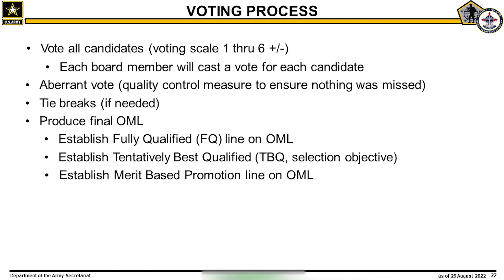We will now cover the voting process. During a board, this process will be repeated until every candidate in the population is evaluated. Board members will vote all eligible candidates using the scale depicted on the word picture. Once voting is complete, board recorders run an aberrant vote report. An aberrant vote is when a file receives two or more scores that may vary by three or more whole numbers. For example, your file receives a score of a 5 plus and a 2 minus — a whole number difference of 3, which is aberrant. Your file is then sent back to the voters who gave you the 5 plus and the 2 minus; the voters have no obligation to change their score. This is done as a quality control measure in case something was missed during the initial screening of a file, and is only done once.